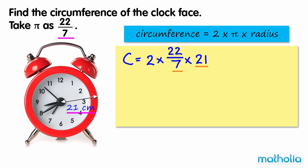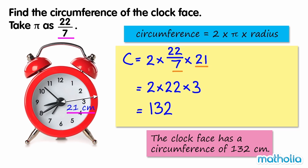21 divided by 7 equals 3. So the circumference is equal to 2 times 22 times 3, which equals 132. The units of length are cm, so the clock face has a circumference of 132 cm.